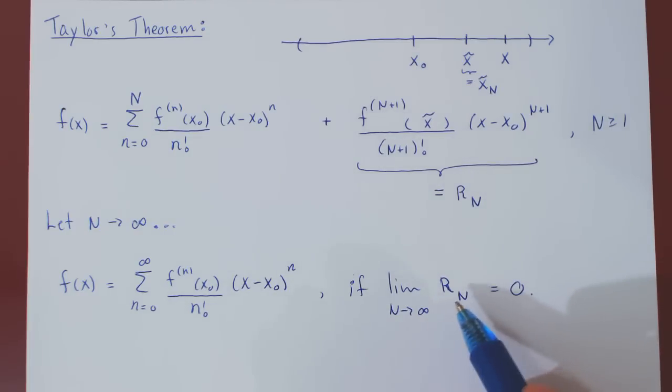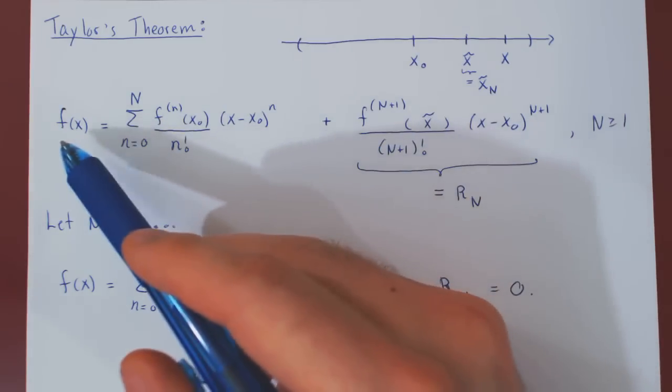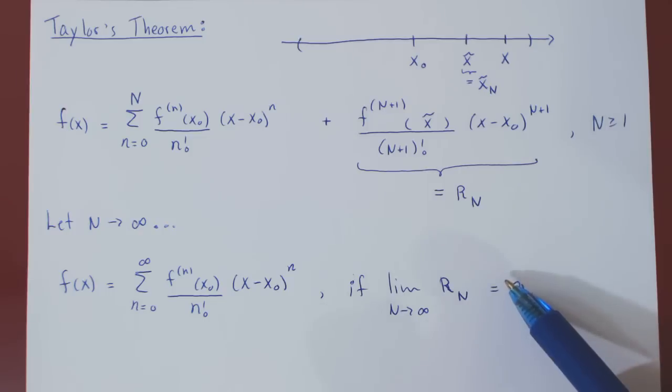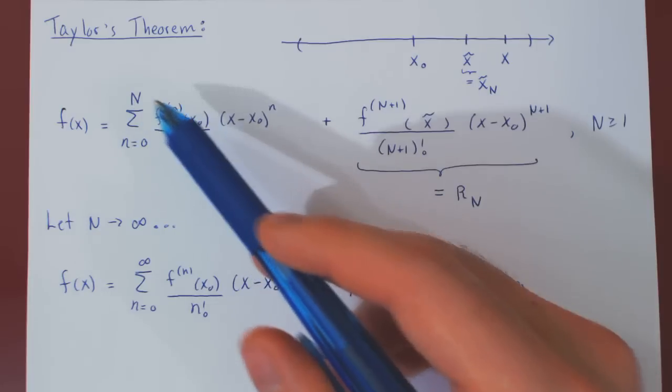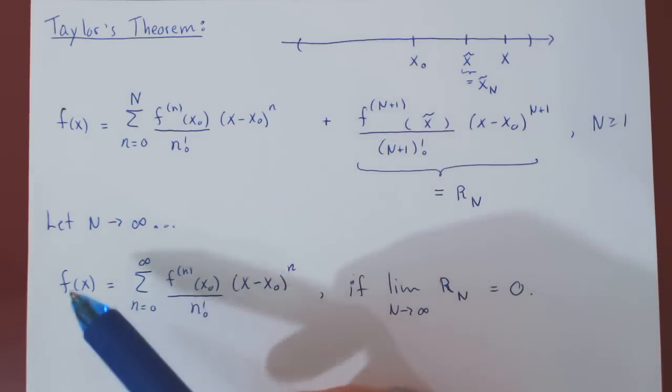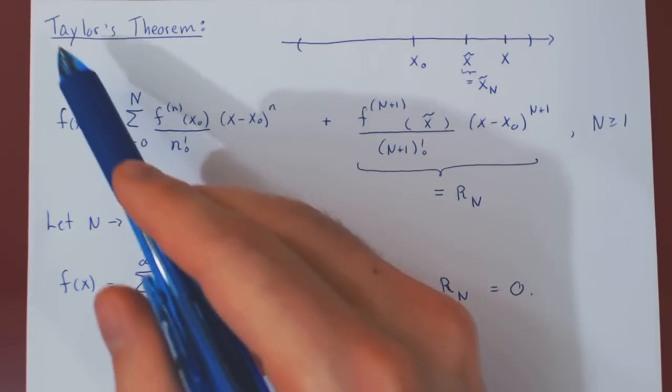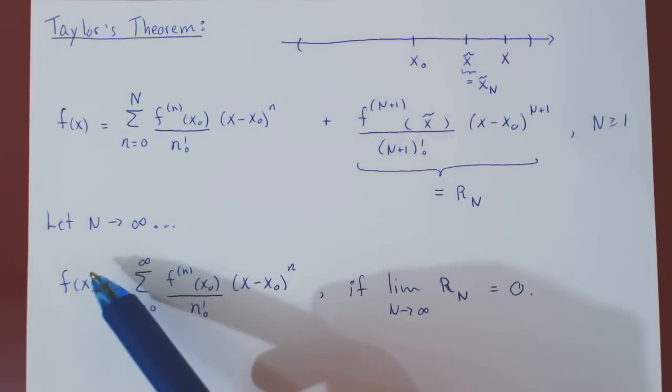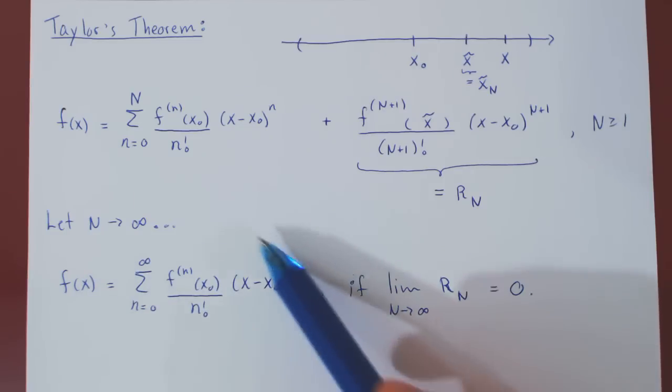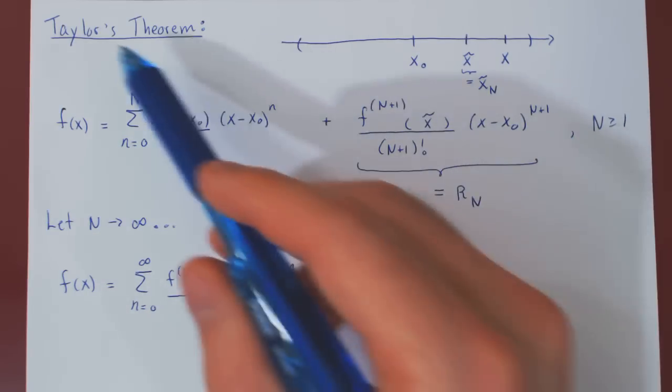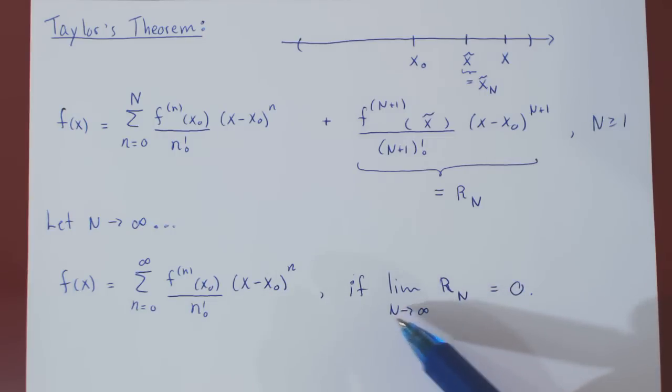If in the limit R_n does converge to 0, then as we're letting uppercase N tend to infinity on both sides, this term will vanish to 0, the truncated Taylor series becomes the full Taylor series, and f(x) stays f(x). This is the criteria for a function to equal its Taylor series. A function will be equal to its full Taylor series centered at x0 if the remainder term from Taylor's theorem does converge to 0 as uppercase N tends to infinity.